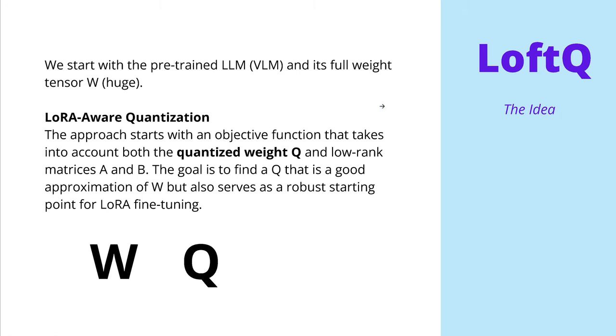So we start here with a pre-trained LLM, a huge one from I don't know what company, and its full-fledged weight tensor, W. And W is huge. Now with the LoRa-Aware quantization we have an objective function that takes into account both the quantized weight tensor, Q, and the low rank matrices. But let's start here at first with the quantization. So our goal is to find a quantized tensor, Q, that is a good approximation of the full-fledged tensor W of our weights of the pre-trained model, but also serves as a robust starting point for the LoRa fine-tuning.